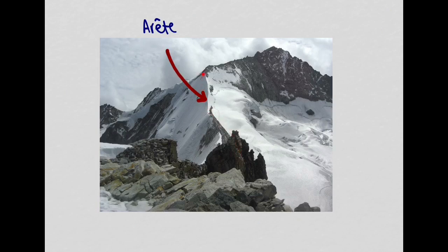This is a good image of an arete. You can see this knife-shaped ridge, this very sharp ridge that runs between two coris.